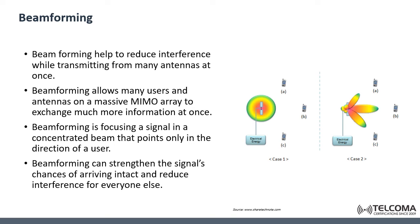In conclusion, beamforming is a technique that focuses the wireless signal towards a specific receiving device, rather than having the signal spread in all directions from a broadcast antenna as it normally would be. This results in a more direct connection, which is faster and more reliable. Signal processing algorithms plot the best transmission route through the air to each user.